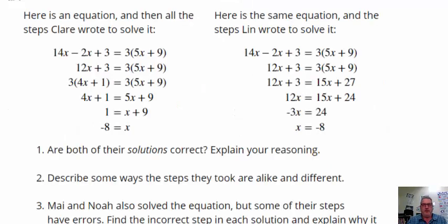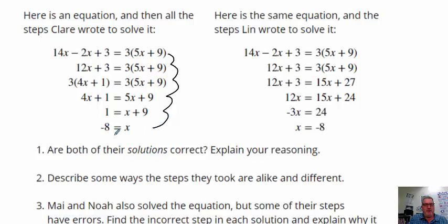Let's go to our next section. We have an equation and it looks like Lynn and Claire both solved this equation and came up with similar answers. Claire wrote negative 8 is equal to x, and Lynn has x is equal to negative 8. They're both basically saying that negative 8 is what x represents. Let's see how they went about solving these and whether they did it the exact same way.